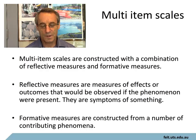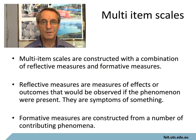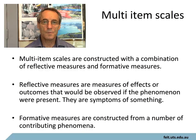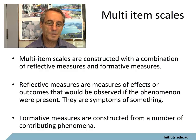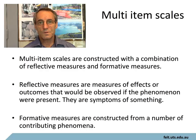Composite measures are multi-item scales. It's a measurement scale the same as anything else, but it's made up of multiple other measurement scales, and that is where the problem lies. The construct is a combination of reflective measures and formative measures, and these can make a difference in the kind of things that you can do.